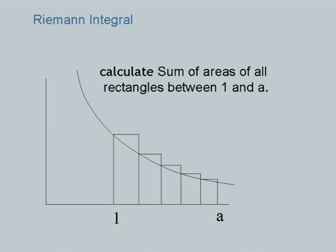Looking at the magnified diagram, there are triangular portions at the top of each rectangle that represent the error in our approximation. Since the curve 1/x is decreasing, the rectangles overshoot the curve, meaning our estimate will be slightly more than the true value. However, by making rectangles narrower (more rectangles), the triangular error areas become smaller and our estimate becomes more accurate.